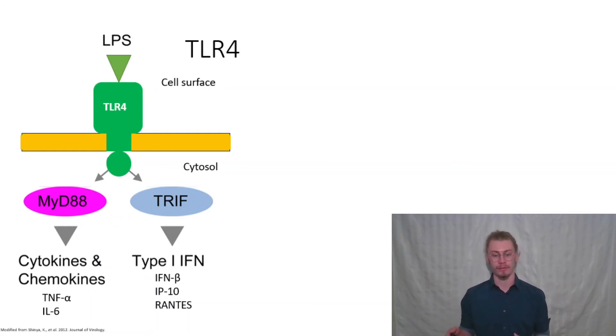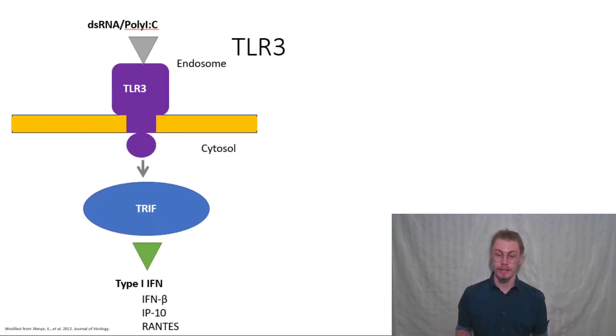TRIF mediates the type 1 interferon response cytokines—interferon beta, IP10, and RANTES. In addition to TLR4, we have TLR3. TLR3 is found inside of the endosomes inside of cells and responds to viral stimuli such as double-stranded RNA and poly-IC. TLR3 mediates signaling through TRIF, which causes a type 1 interferon response, which is identified by the secretion of interferon beta, IP10, and RANTES.